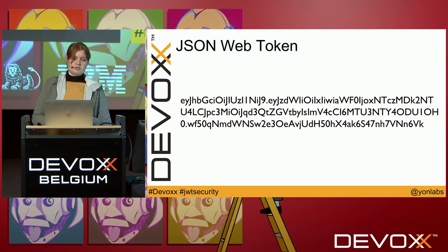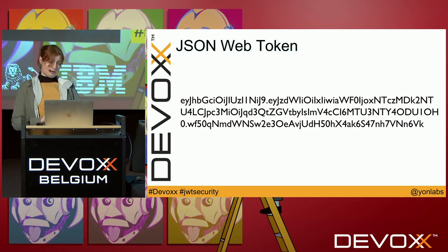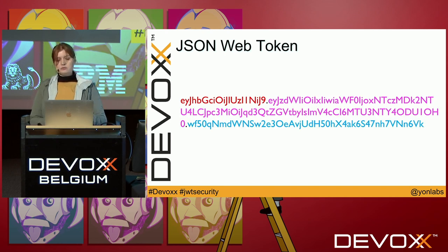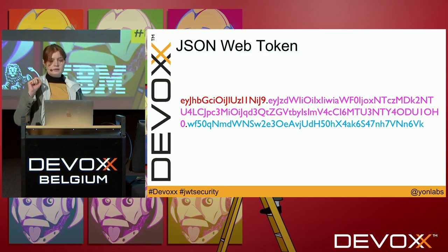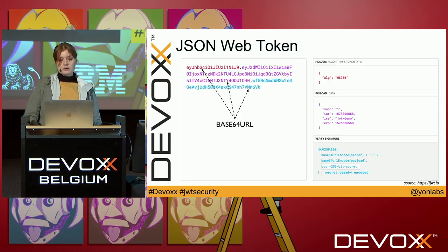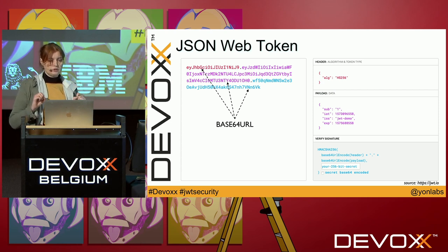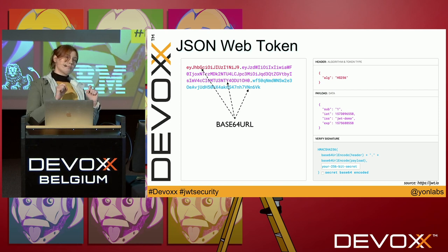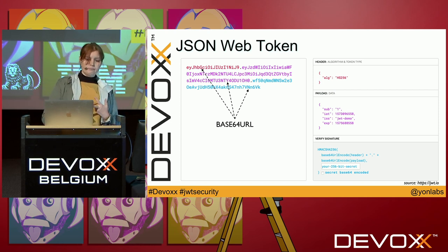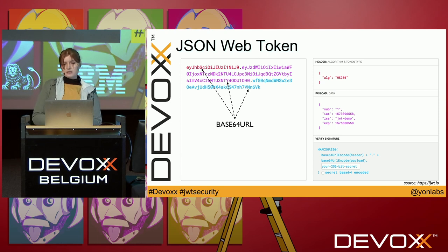That's an example of a JSON Web Token. We see a lot of letters, some numbers, and occasional dots. When we take a closer look at JWTs, it turns out it consists of three parts, separated by two dots. It turns out that a JSON Web Token is simply base64 URL encoded — each part is encoded separately. When we decode it, we can see plain text of a header, payload, and signature. The signature usually is not very readable because it's usually binary content.